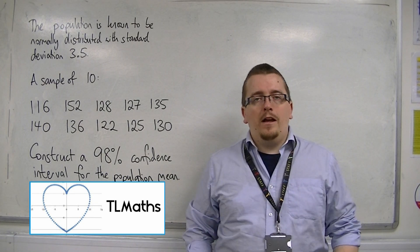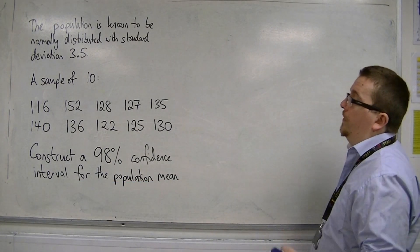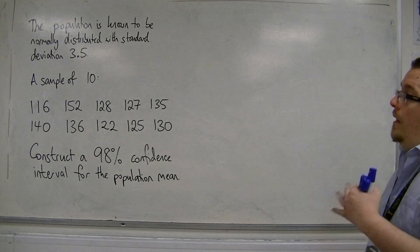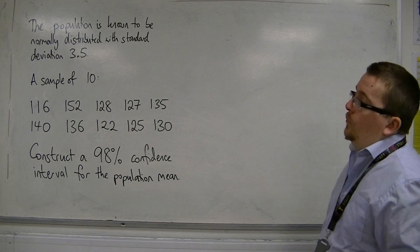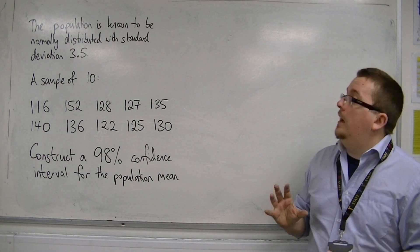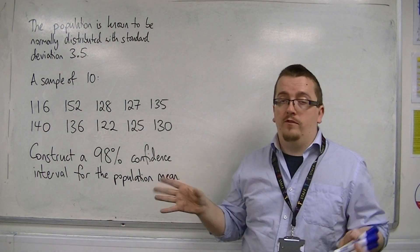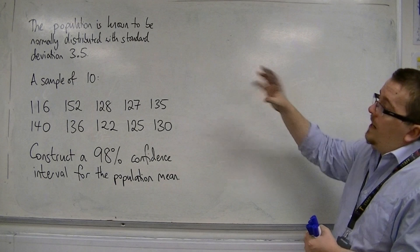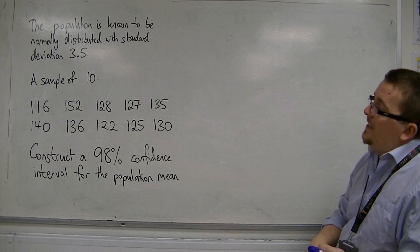In this video, I'm going to show you how to actually build a confidence interval. And what we're going to be saying is that we know that the population is normally distributed. We don't know actually what the population is or what the information is, but the standard deviation is 3.5, so we know that.